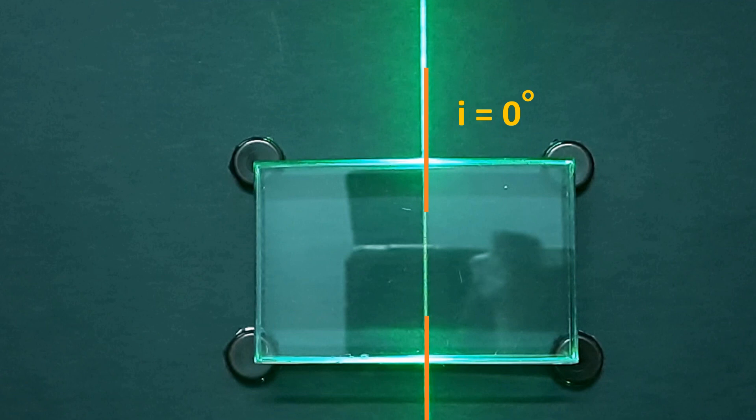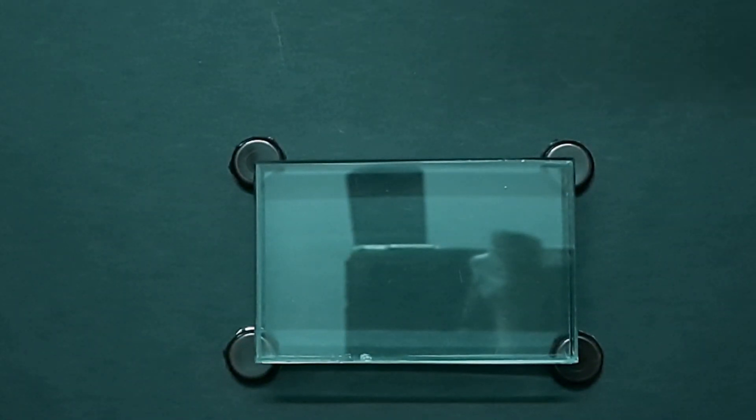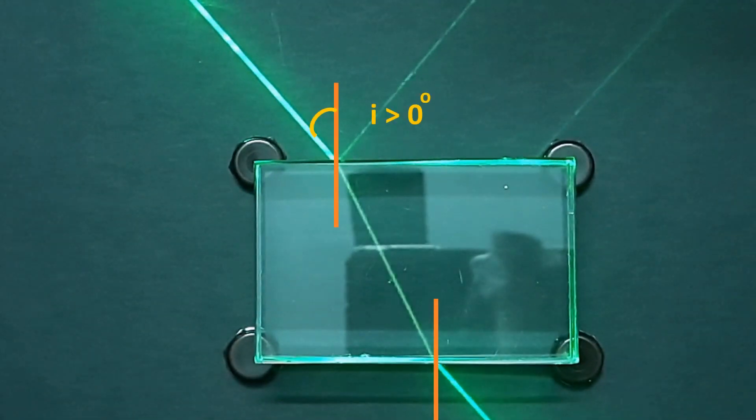There is no bending in this case. As we increase the angle of incidence of laser beam, that is any value other than zero, it bends. Here in this case it bends towards the normal as it travels from a rarer medium air to denser medium glass.